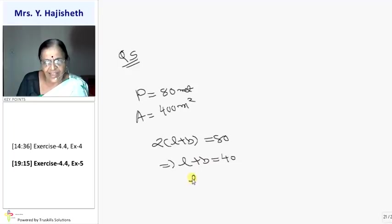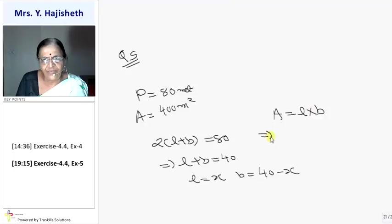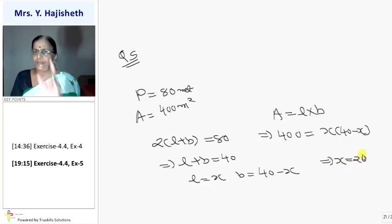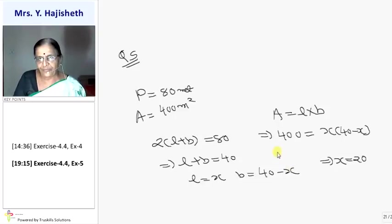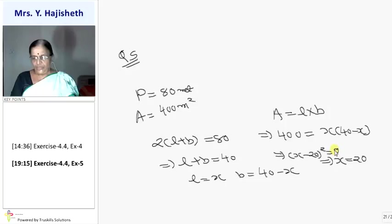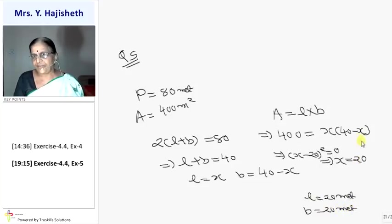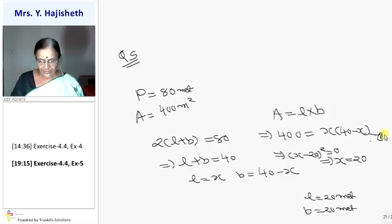Simplify: x² − 40x + 400 = 0, which is (x − 20)² = 0. That implies x = 20. So length is 20 m and breadth is also 20 m. This situation is possible. That completes exercise 4.4.